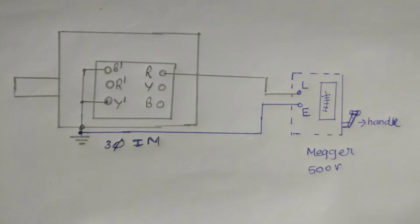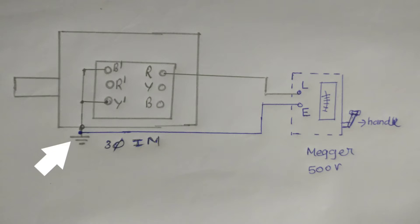This is the terminal connection. This R terminal and this R' terminal — we are measuring the insulation resistance of the R phase winding with respect to earth, that is the insulation strength of that winding. Between R and earth, we have connected the megohmmeter. As per the procedure, the other windings have to be connected to earth also. So the Y winding and the B winding are shorted to each other and that short connection is connected to the earth itself.